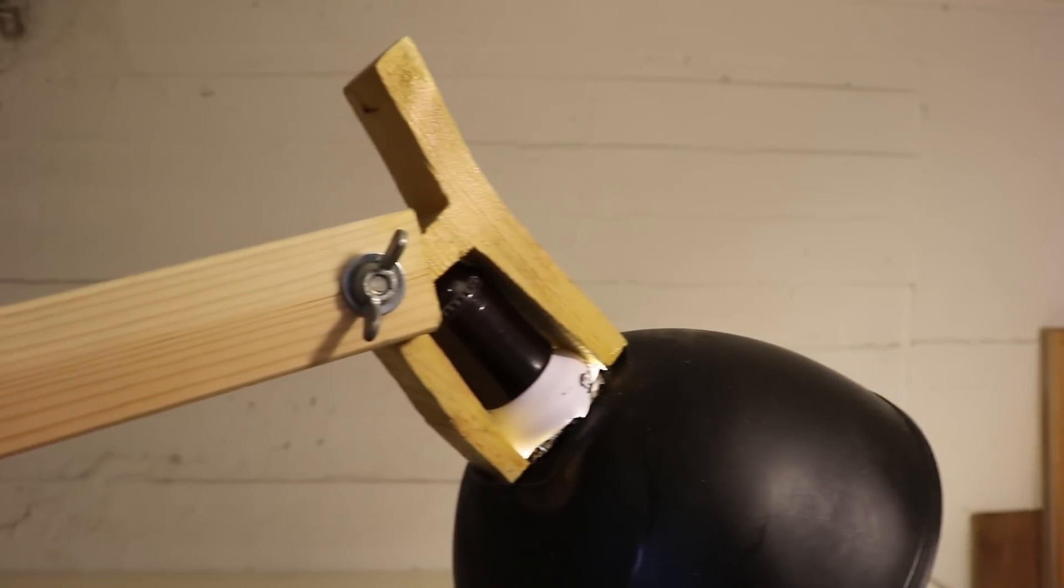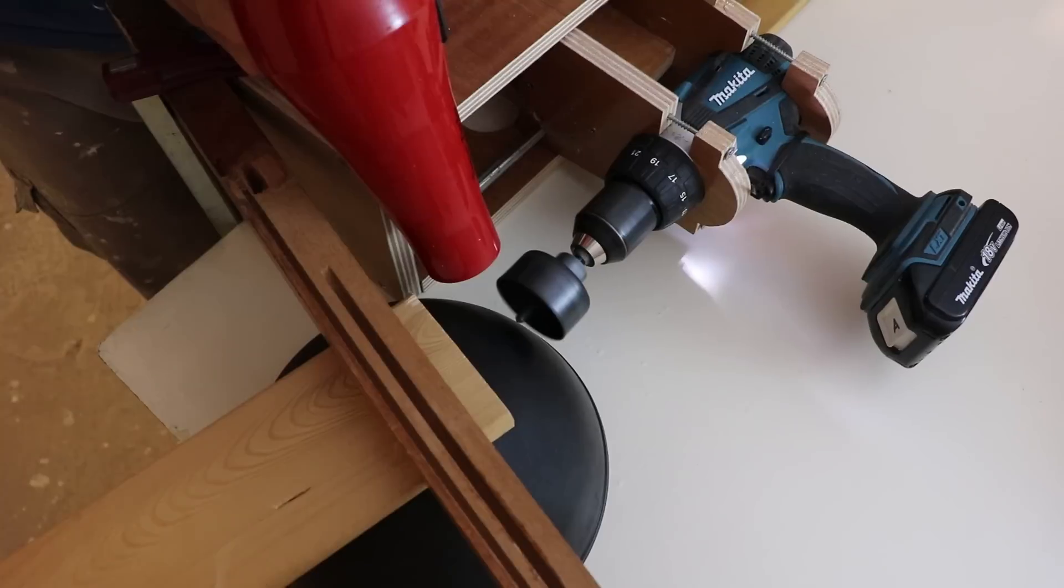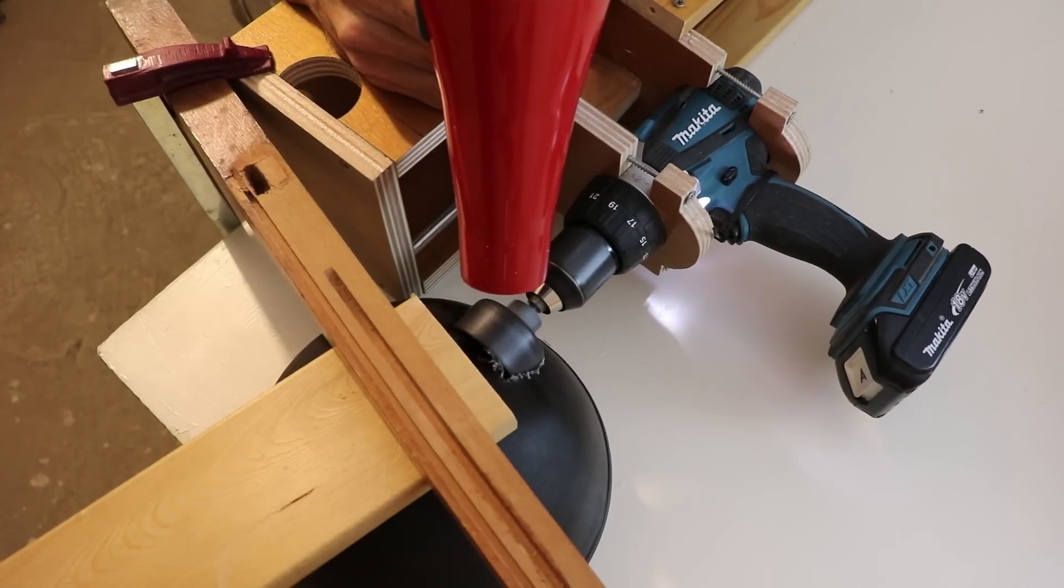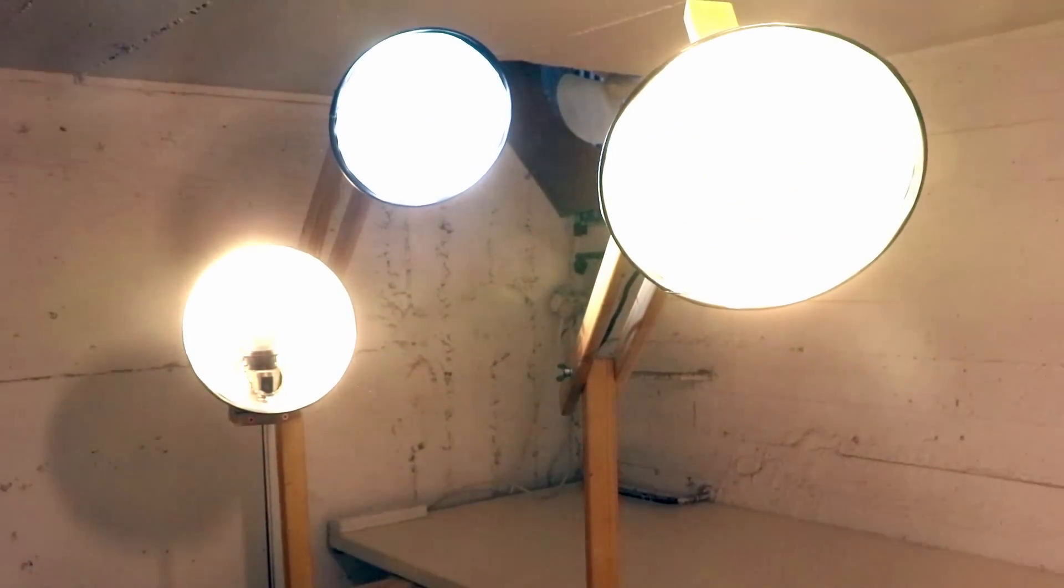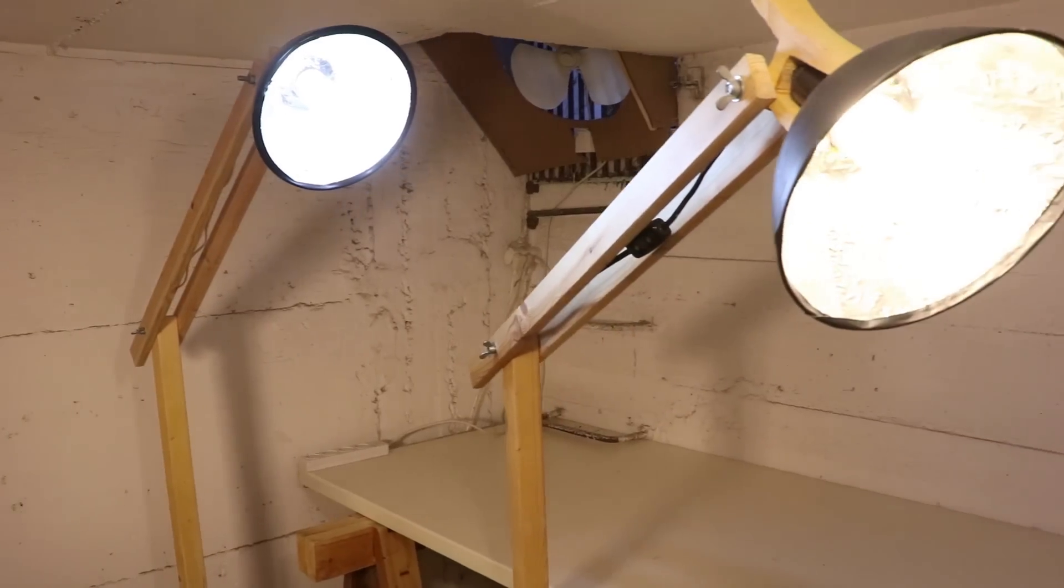I also experimented with different types of light fixture mounts, and different ways of drilling the hole in the bowl. I ended up making three reflectors, and built some arms to hold them. They came out pretty nice.